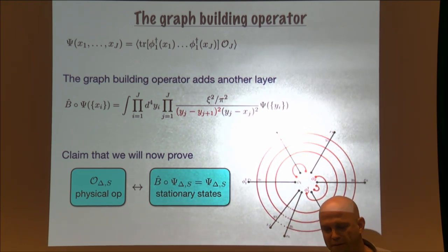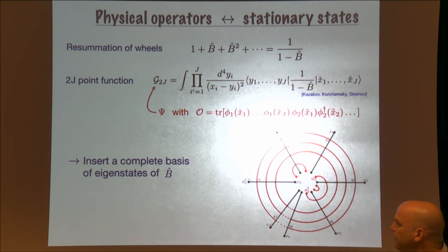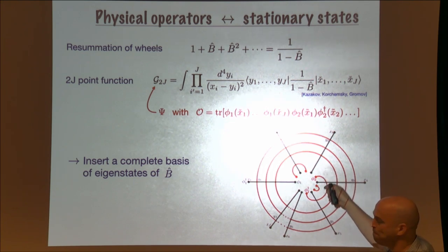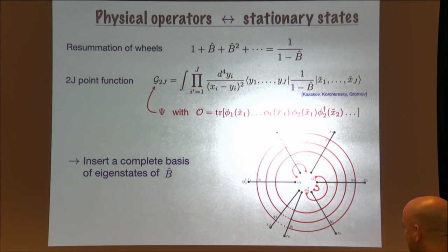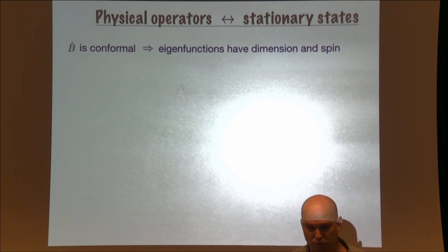The way to prove this is the following. Since we are only summing this type of diagrams, the sum over all graphs is just a geometric sum in terms of this graph building operator. Suppose now we want to compute this 2J-point function — we just have to put this geometric sum in the middle. Whenever you see such an expression, the natural thing to do is put a complete basis of eigenfunctions of the graph building operator and integrate or sum over them.